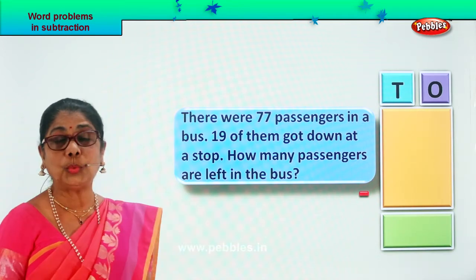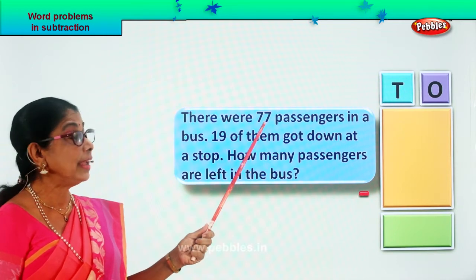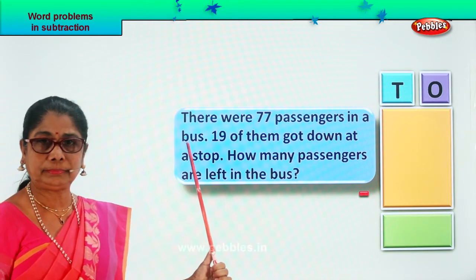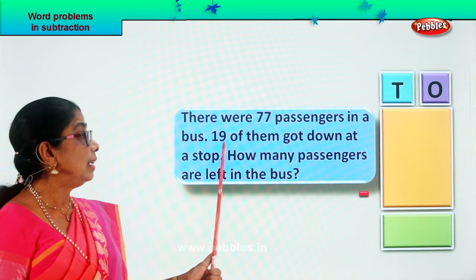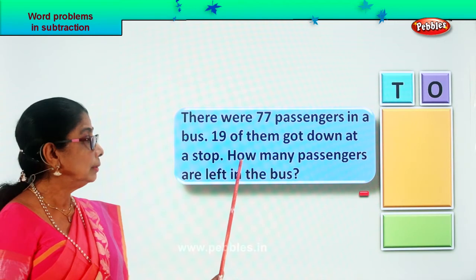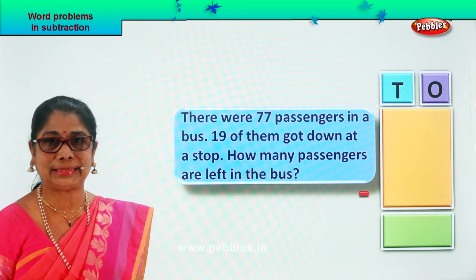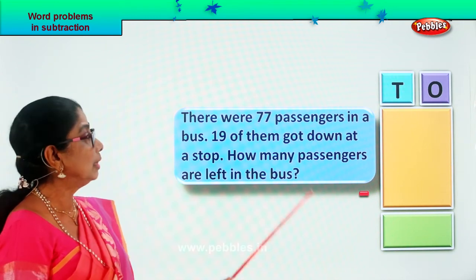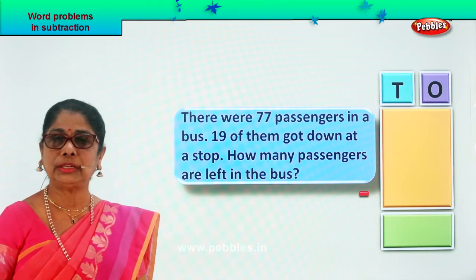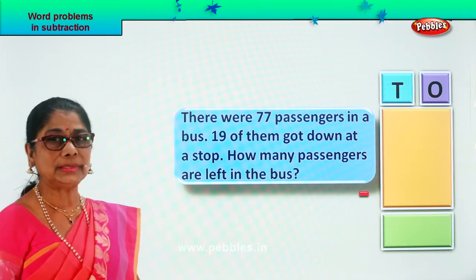Let's read the word problem together. There were 77 passengers in a bus. 19 of them got down at a stop. Now the question is, how many passengers are left in the bus? Let's arrange the numbers and find out.